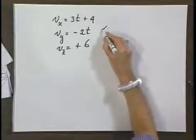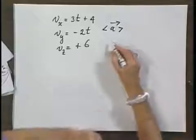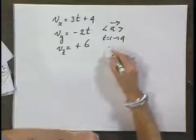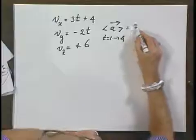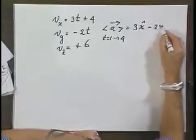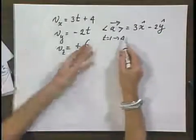We calculated the average acceleration between time t equals 1 and time t equals 4. And what did we find? We found 3x-roof minus 2y-roof. And we picked these two times randomly.